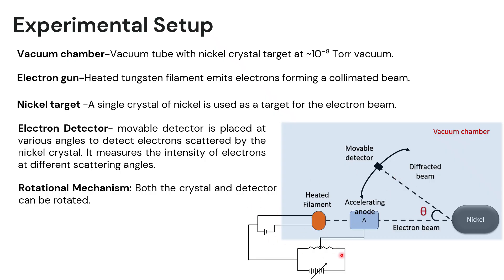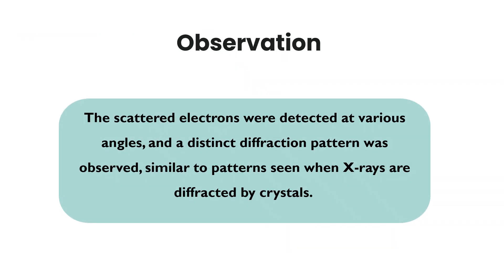They were expecting that after the interaction of electrons with nickel crystal, there would be scattering of electrons. But instead of scattering, they got different results. The scattered electrons were detected at various angles, and a distinct diffraction pattern was observed, similar to the pattern observed for X-ray diffraction.